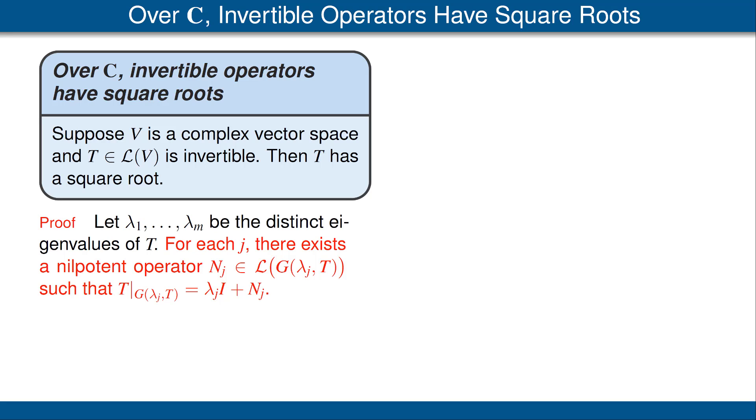The reason for this is that we had our decomposition theorem, and it said that T minus λⱼI restricted to that generalized eigenspace is a nilpotent operator. And then just doing simple algebra, we get the result shown here.